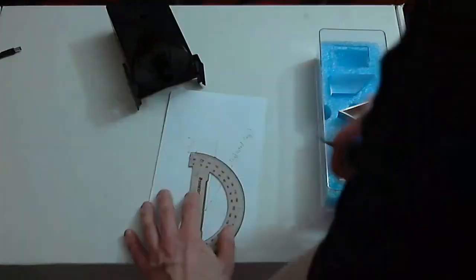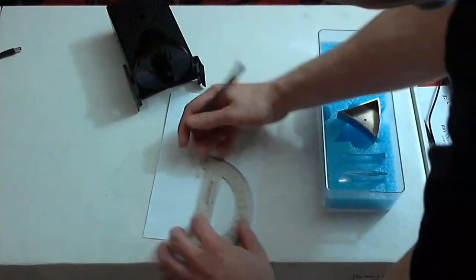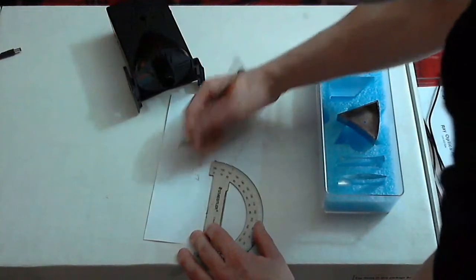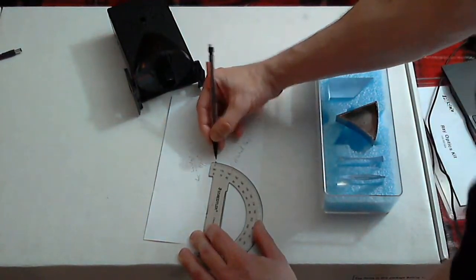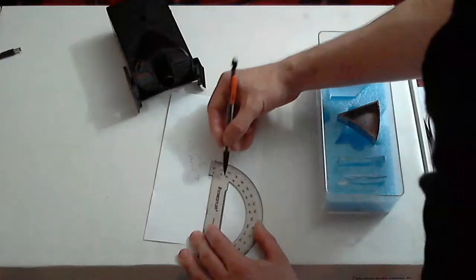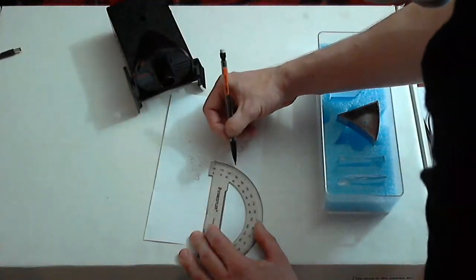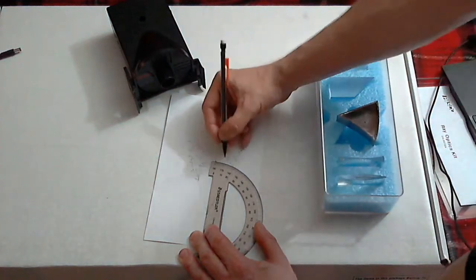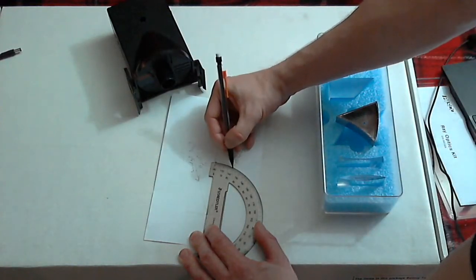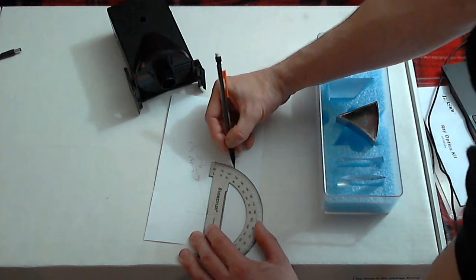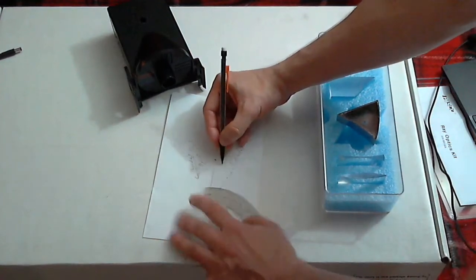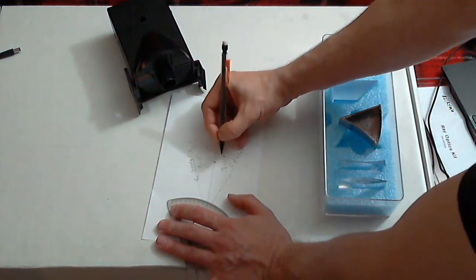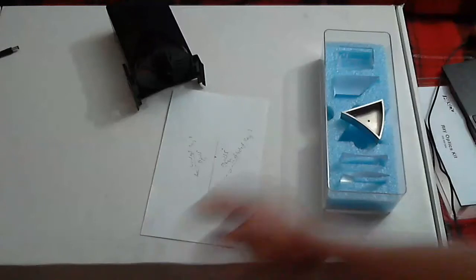Then flip it around. Once again align with the dot and the zero. And then let's see, just about the same. It looks like 20, more like 21 and a half on this side, but there is a margin of error for this.